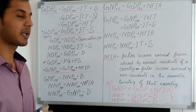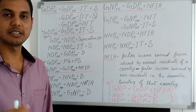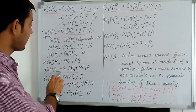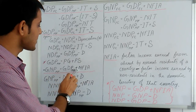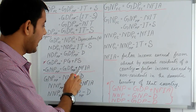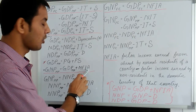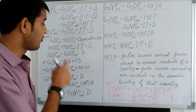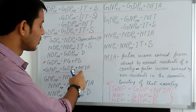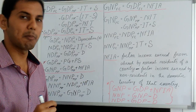GNP at market price denotes gross national product at market price. GNP at market price equals GDP at market price plus NFIA, where NFIA denotes net factor income from abroad. This is a very important concept, as it is used to differentiate national income from domestic income.